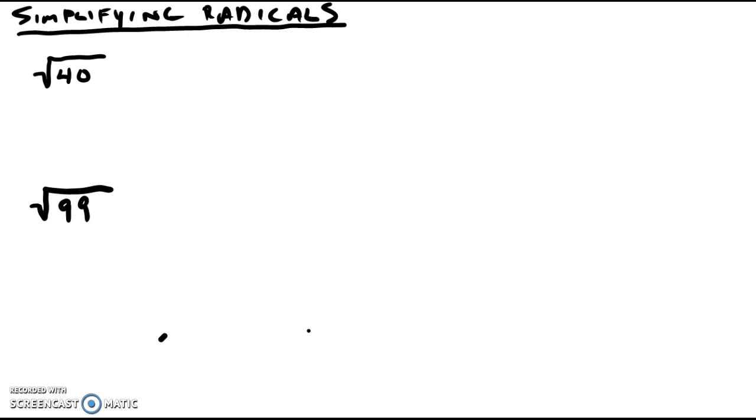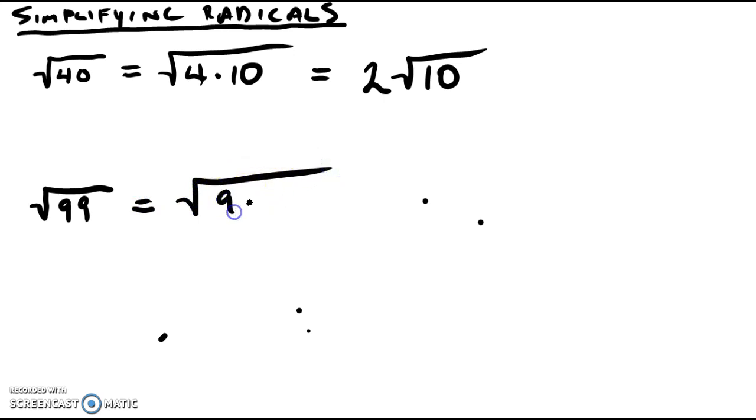If we know that 4 times 10 is equal to 40, then we can simplify this radical by asking, what's the square root of 4? Well, the square root of 4 is 2. So we're going to take the square root of 4, move it outside, and keep the 10 inside because 10 does not have an even square root. For 99, we know that 9 times 11 is 99. The square root of 9 is 3, and the 11 we keep inside.